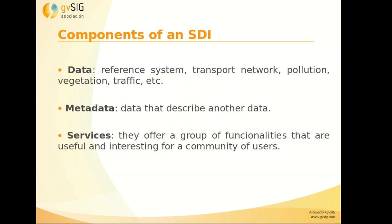The components of an SDI are data, metadata and services. Data are, for example, the transport network, the vegetation, etc. Metadata are the data that describe other data. In the case of food, it's like the ingredients. And in the case of geographic information, we have the scale, the format, who is offering that cartography, the extent, the coordinates, etc. And finally, we have the services that offer a group of functionalities that are useful for a community of users.